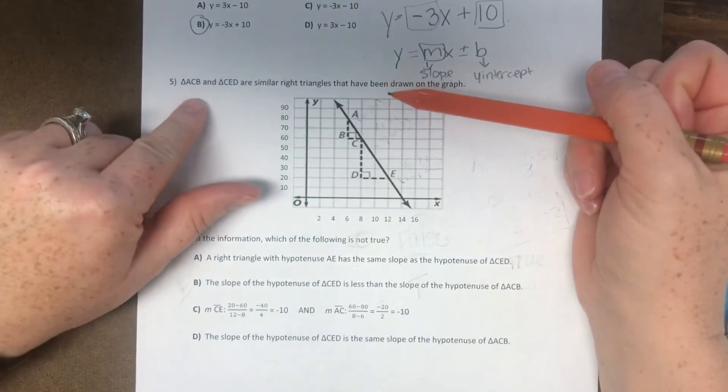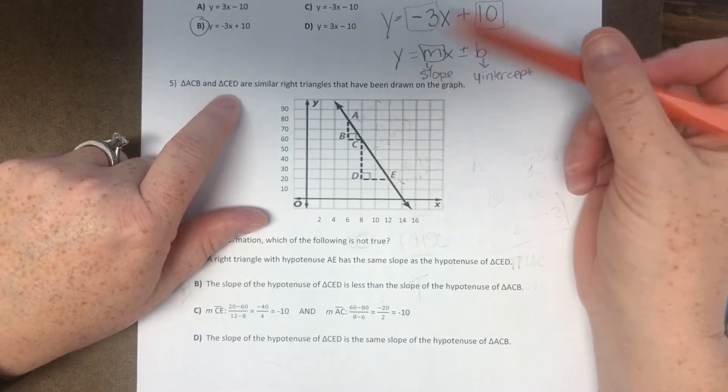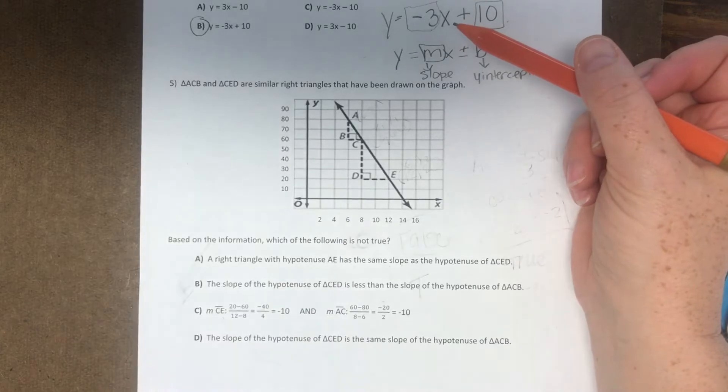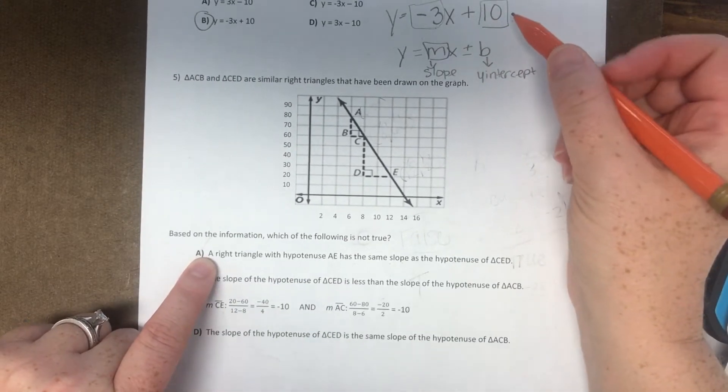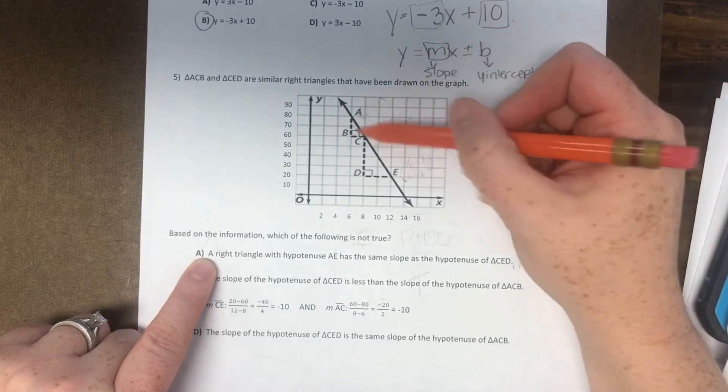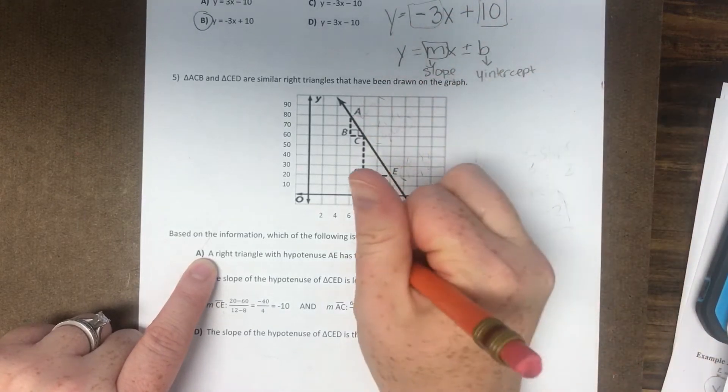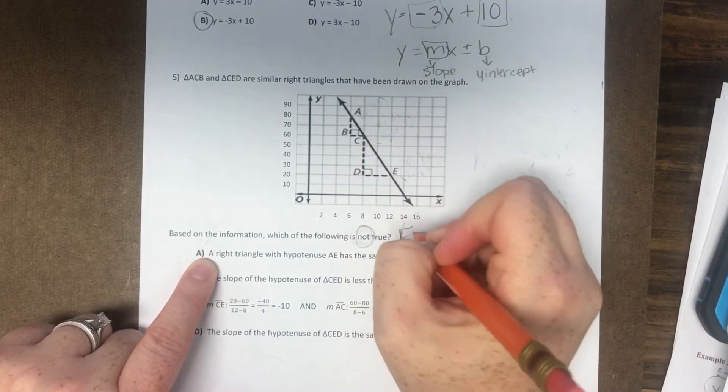It says triangle ACB and triangle CED are similar right triangles that have been drawn on the graph. Based on the information, which of the following is true. We're hoping that the slope is the same, but we're looking at which one is not true. So we're looking for the false statement.